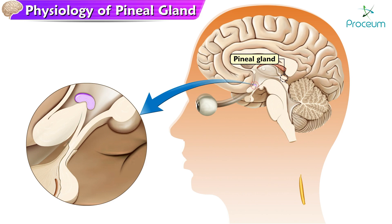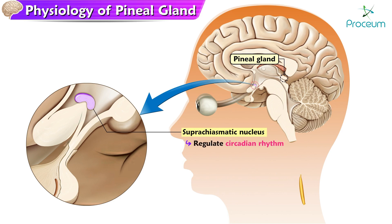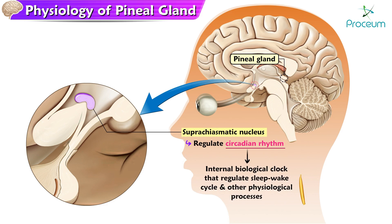The pineal gland contains specialized neurons called pinealocytes with endocrine functions. It is controlled by the suprachiasmatic nucleus, which is located in the hypothalamus. The suprachiasmatic nucleus is responsible for regulating the circadian rhythm, which is the internal biological clock that regulates the sleep-wake cycle and other physiological processes.